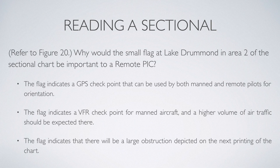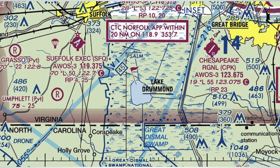What I would do is refer over to figure 20 and find area 2 and find the flag located at Lake Drummond on the map. It's going to look something like this. You'll see right in the middle is Lake Drummond, and there is the flag that it's talking about.